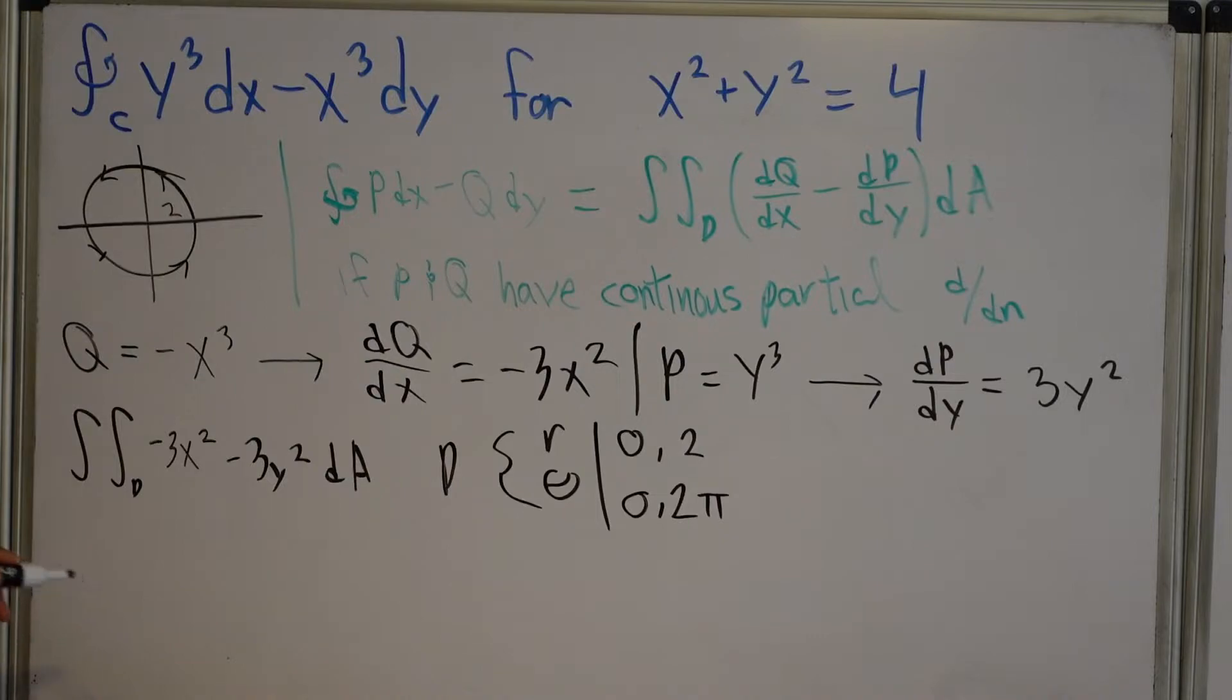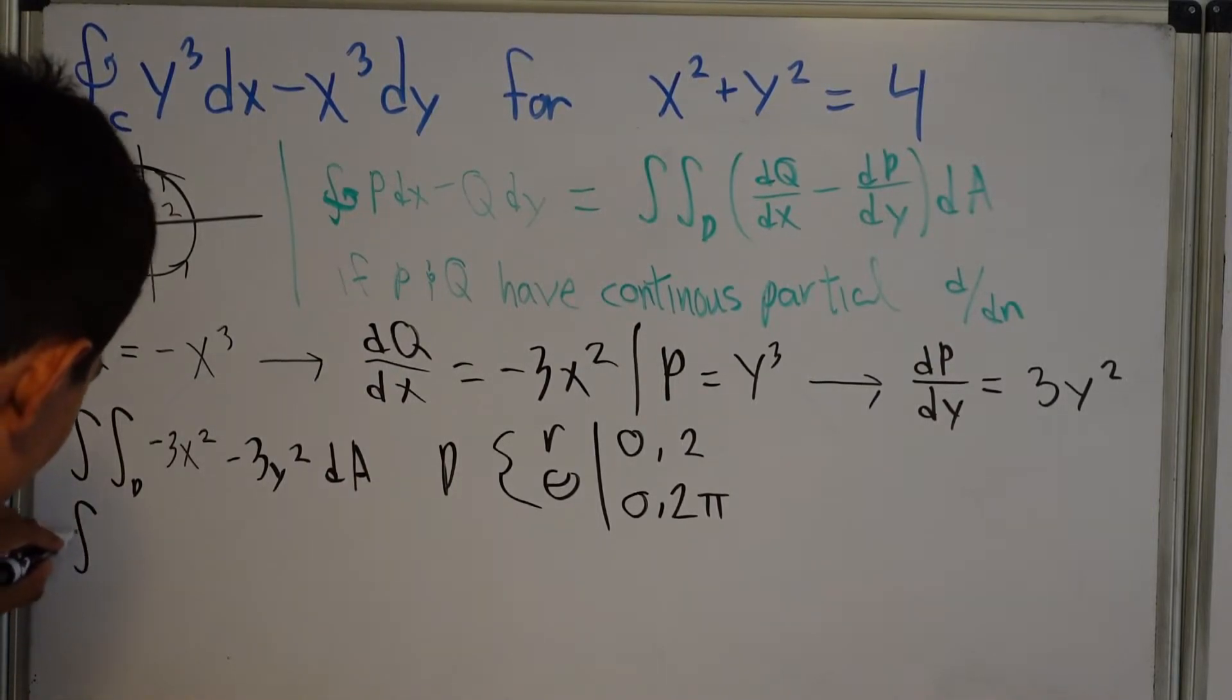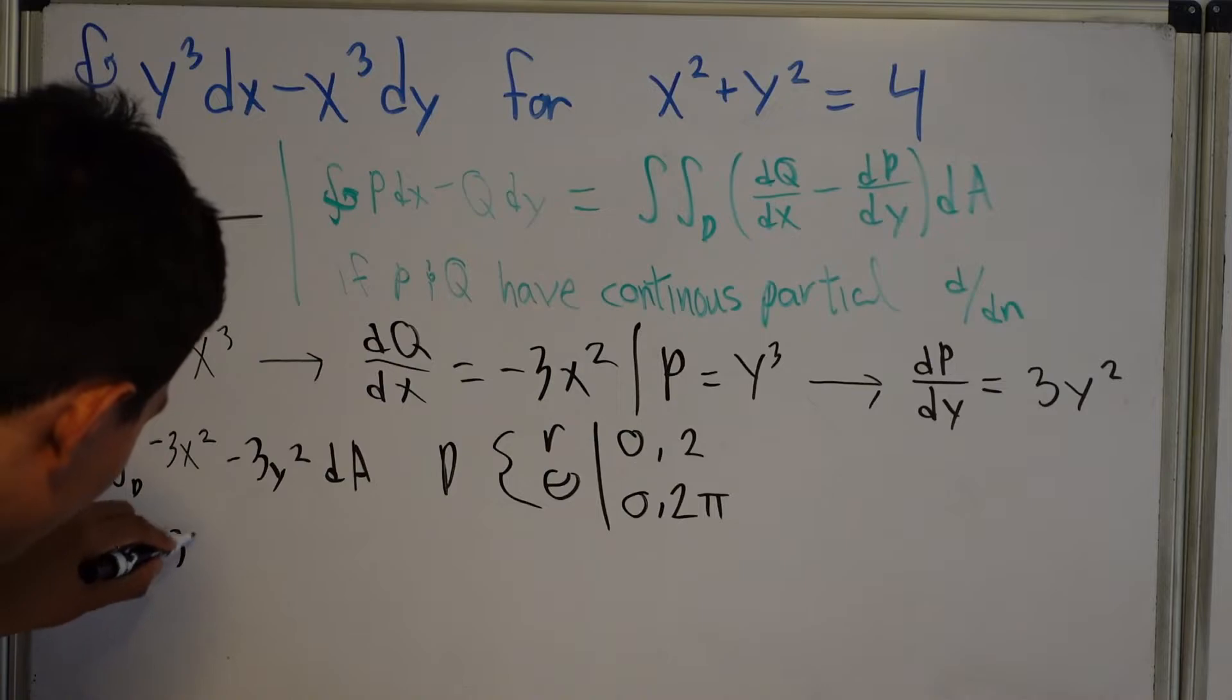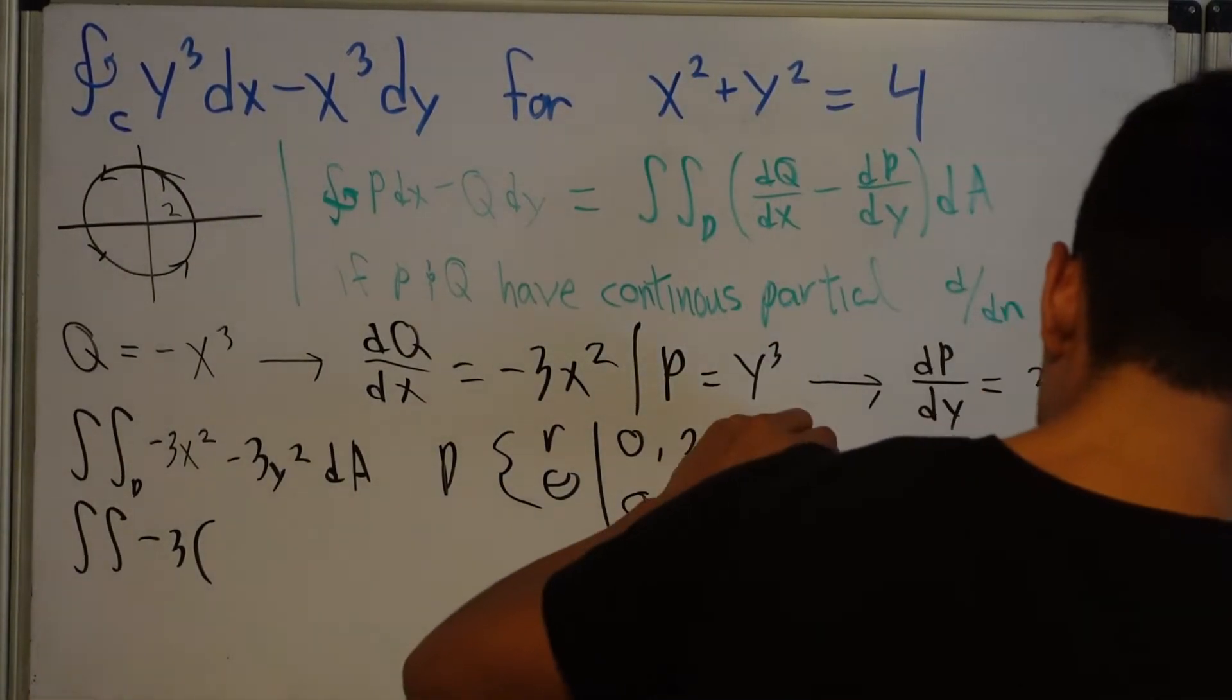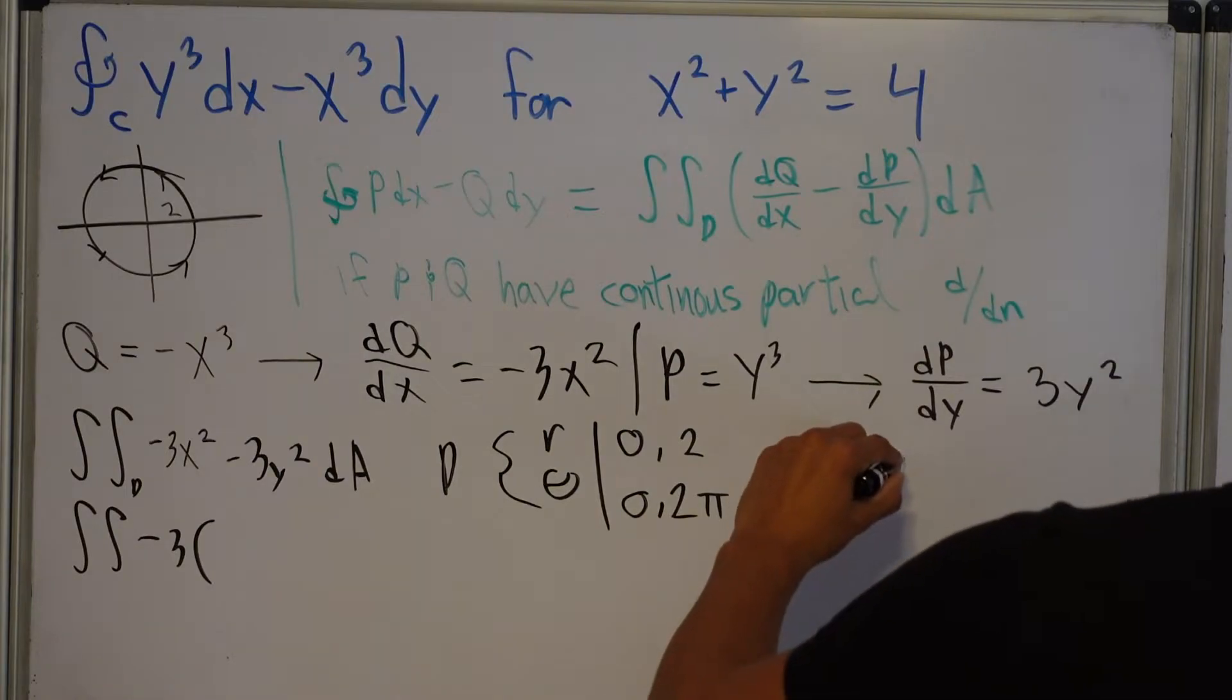Okay. So that's all good. Now we can rewrite this integral. As, we'll factor out the negative 3, okay? If we factor out this negative 3, we got X squared minus Y squared.